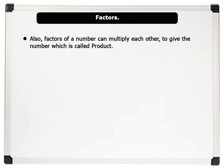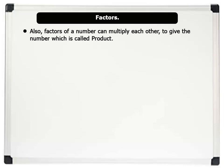Also, factors of a number can multiply each other to give the number which is called product. For example, 2 and 4, which are factors of 8, can multiply each other to give 8, which is the product.